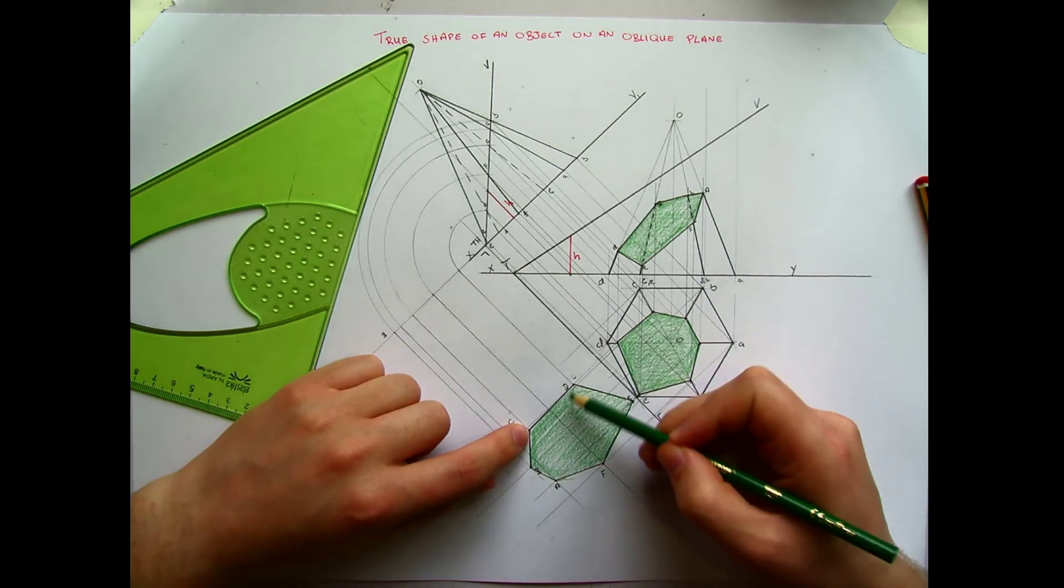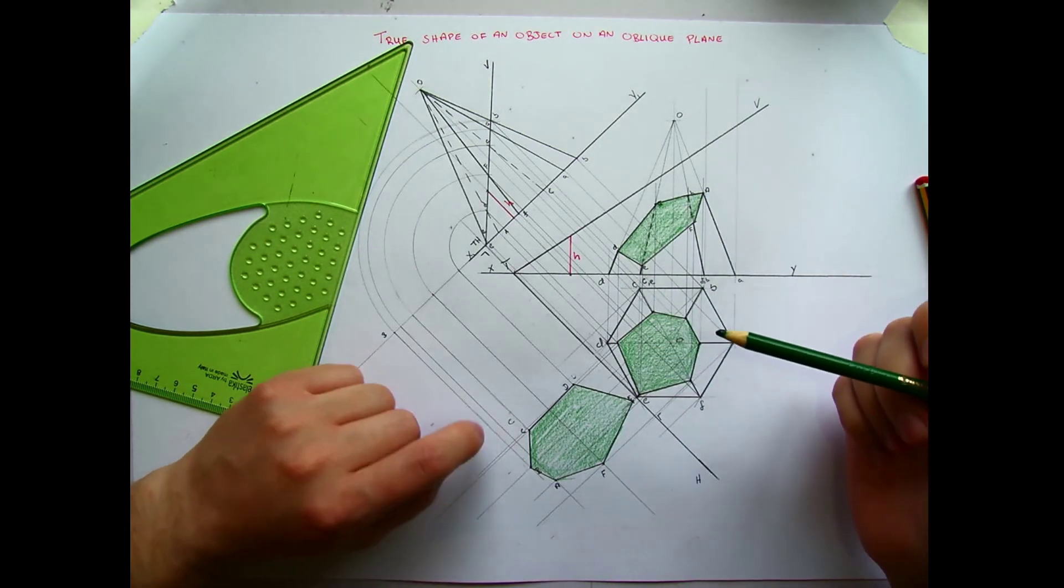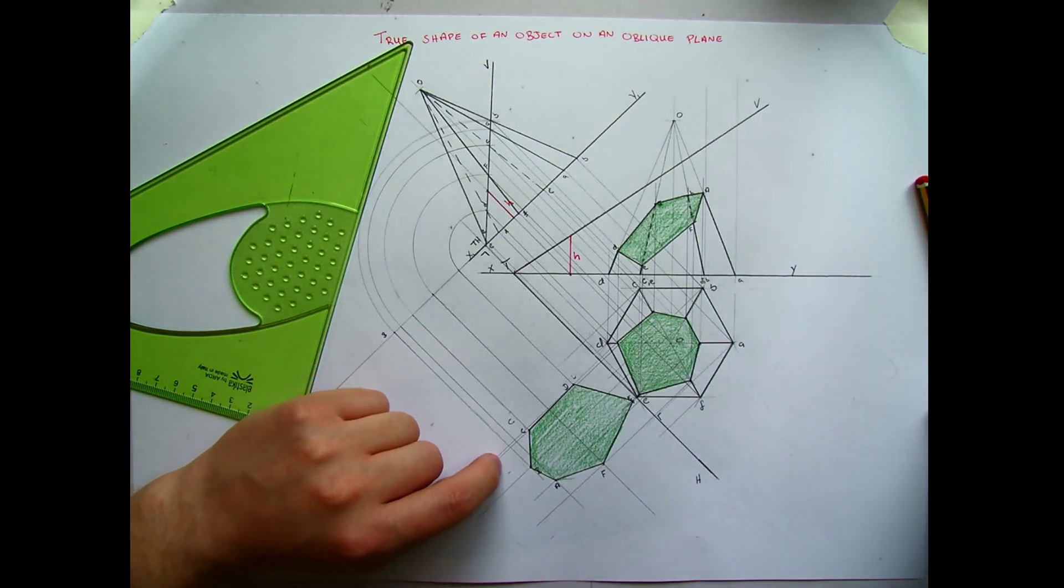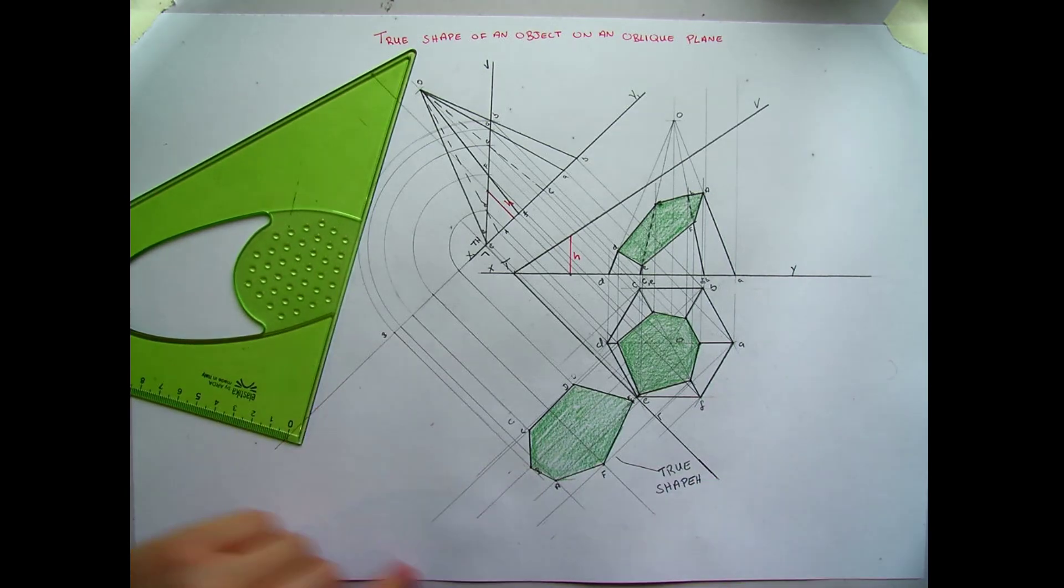So C to D. Each of my points here I have located them. And this is the true length of each one of those lines. So this in here is the true shape. Of the cut surface.